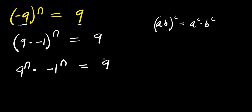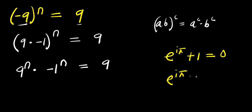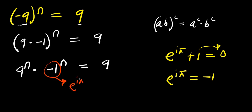Now I am going to consider this by Euler's identity. If you have e power i times pi plus 1, this equals 0, meaning that e power i times pi equals negative 1. So negative 1 is replaced with e power i times pi.